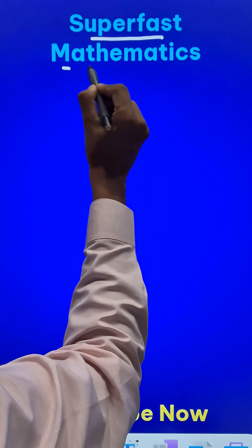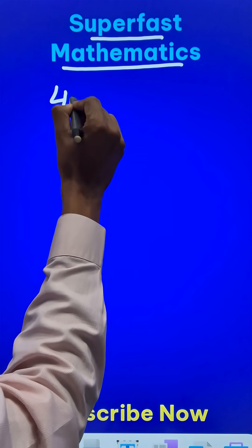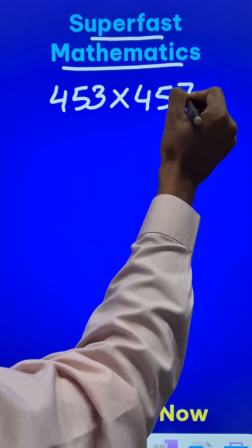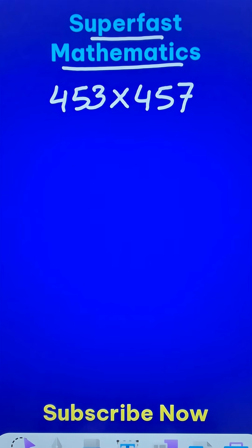Here is a super-fast mathematics shortcut trick to multiply 453 and 457. Now there is a specific property which these two numbers obey.